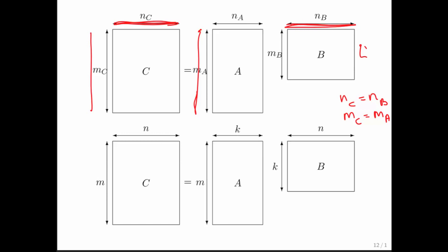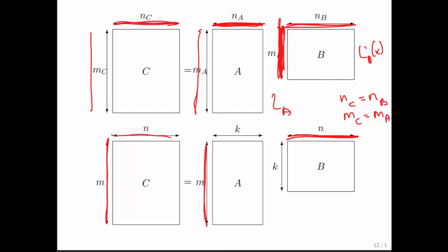Whatever comes out of L sub B has size M sub B, and that is fed into linear transformation L sub A. Therefore, this size must be the same as that size. If you summarize all of that: the number of rows in A must be the same as the number of rows in C; the number of columns in B must be the same as the number of columns in C; and this inner dimension must match as well. So there are really only three sizes involved — M, N, and K — and everything else is determined from how these must match.